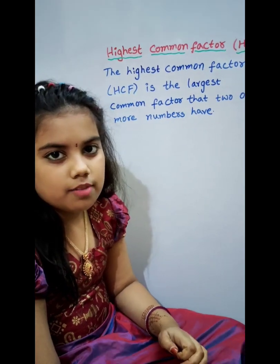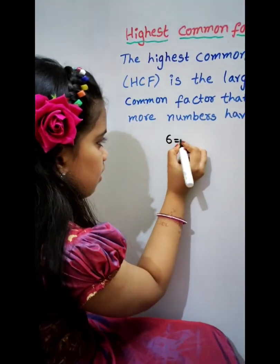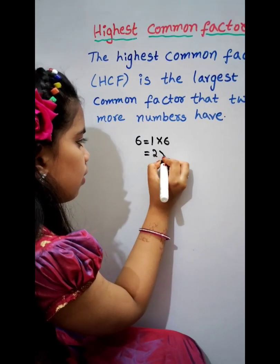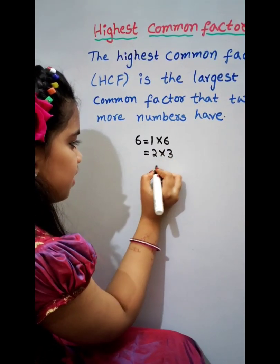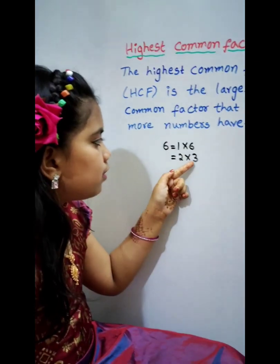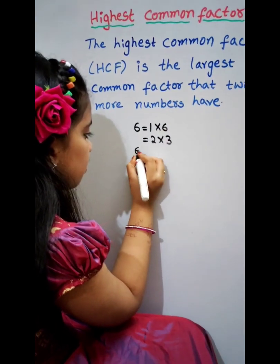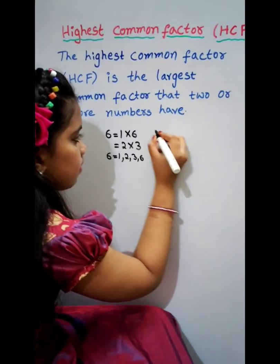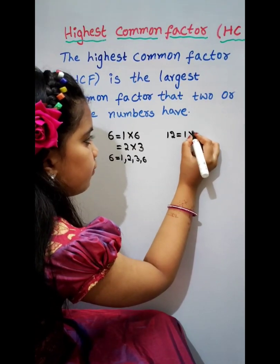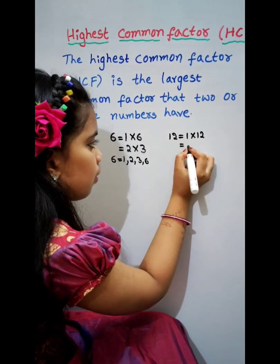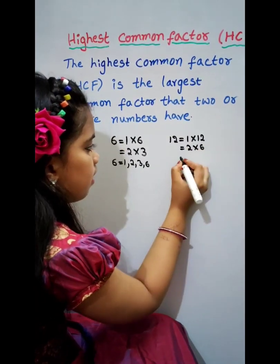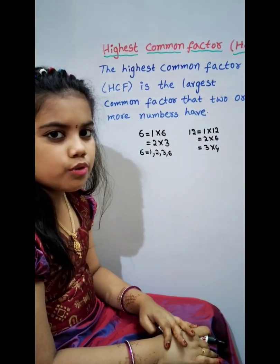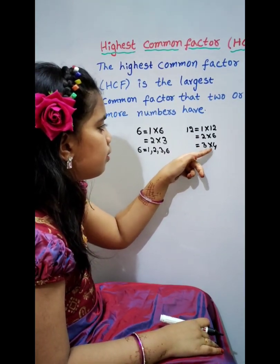HCF of 6 and 12. 1 times 6 is 6. 2 times 3 is 6. The Factors of 6 are 1, 2, 3, 6. 1 times 12 is 12. 2 times 6 is 12. 3 times 4 is 12. The Factors of 12 are 1, 2, 3, 4, 6, 12.